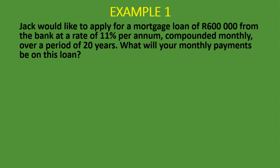Here's an example. Jack would like to apply for a mortgage loan of 600,000 Rand from the bank at a rate of 11% per annum compounded monthly over a period of 20 years. What will his monthly payments be on this loan? The loan he wants to get today from the bank is 600,000 Rand. The rate is 11% per annum compounded monthly over 20 years. The payment is what we are trying to solve.